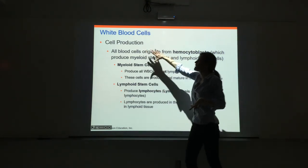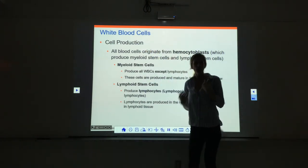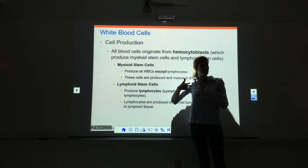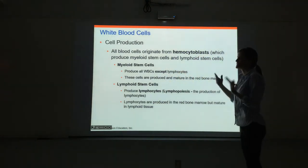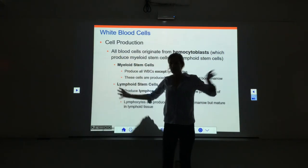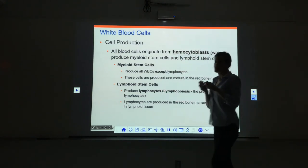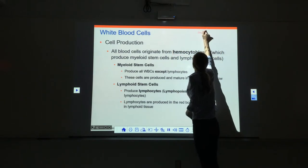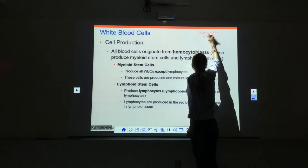Now we're going to talk about white blood cell production. We touched on this when we talked about red blood cell production because there are some similarities, but we'll go through it in more specific detail. Remember, all blood cells — red, white, and platelets — all originate as hemocytoblasts.